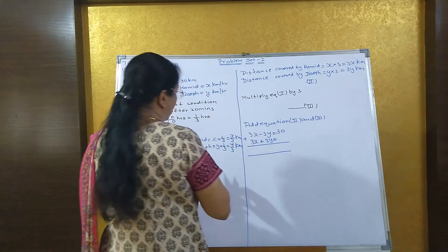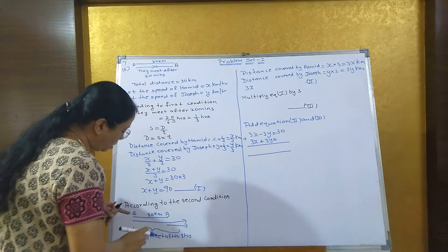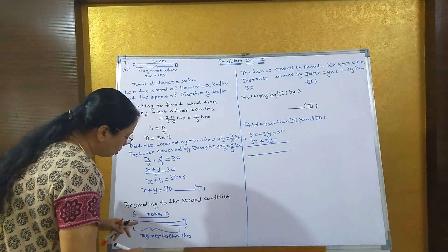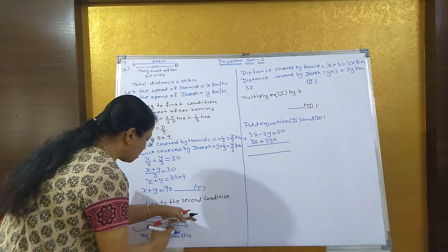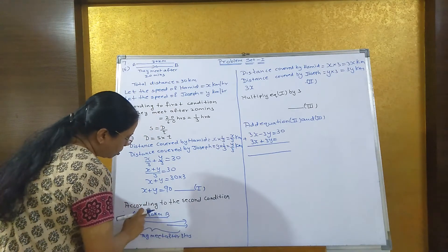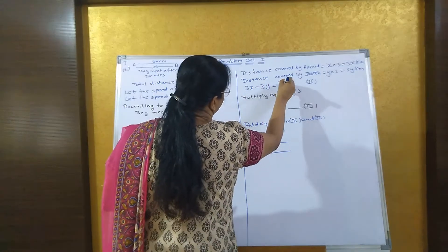So what is your equation? The total distance covered by Hamid minus the total distance covered by Joseph equals 30. So 3x minus 3y equals 30.